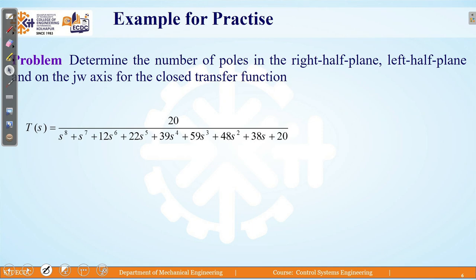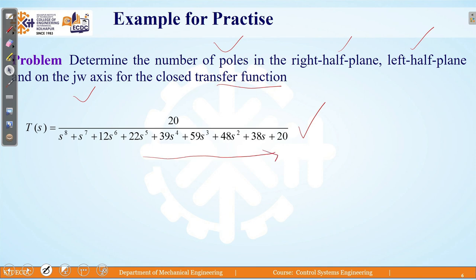So this was the second case. Students, you can practice this problem: determine the number of poles in the right half plane, the left half plane, and on the imaginary axis for this closed loop transfer function. In the next lecture, we will see how you have solved it and what problems you encountered. The transfer function given is 20 divided by a characteristic equation with highest power s⁸ in decreasing order of s. You can work out whether it comes as a special case with one element as 0, or whether the entire row comes out to be 0, and depending upon the considerations, predict the system stability.